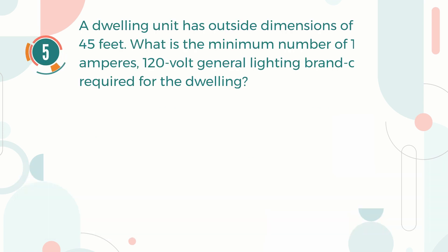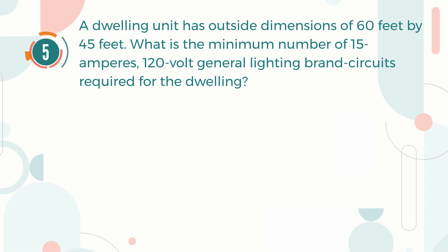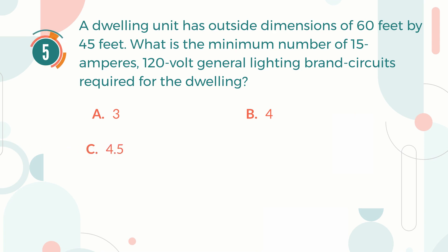Number 5. A dwelling unit has outside dimensions of 60 feet by 45 feet. What is the minimum number of 15 ampere, 120 volt general lighting branch circuits required for the dwelling? A. 3. B. 4. C. 4.5. D. 5.